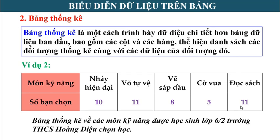Vậy là chúng ta đã nghiên cứu xong 2 nội dung chính của bài: bảng dữ liệu ban đầu và bảng thống kê. Để củng cố 2 nội dung này, chúng ta cùng sang nội dung thứ 3: luyện tập củng cố.